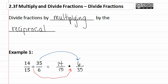Now, we reduce. Seven will go into fourteen two times and seven will go into thirty-five five times. Three goes into fifteen five times and three goes into six two times. There are no more common factors. Therefore, we have four over twenty-five.